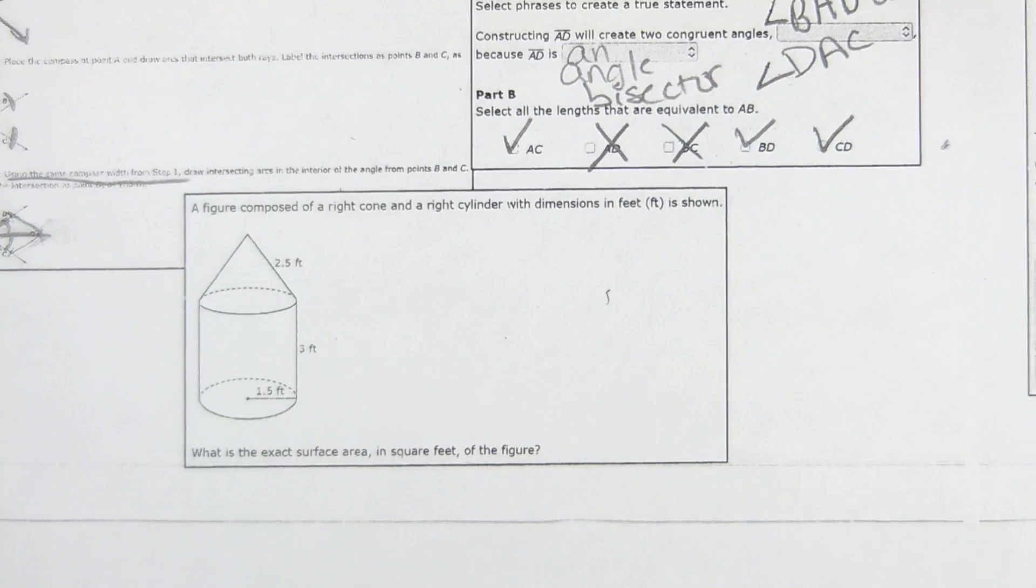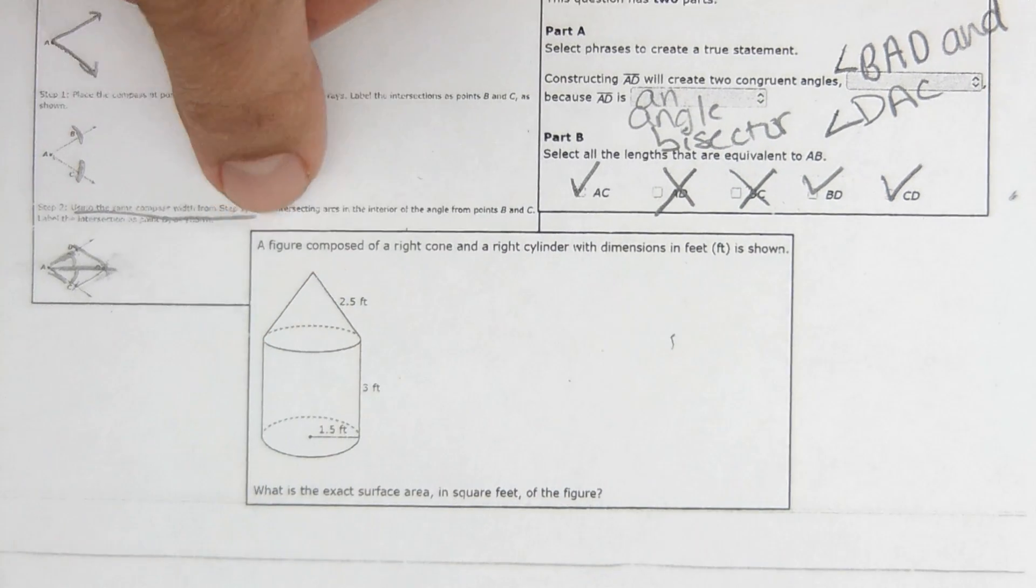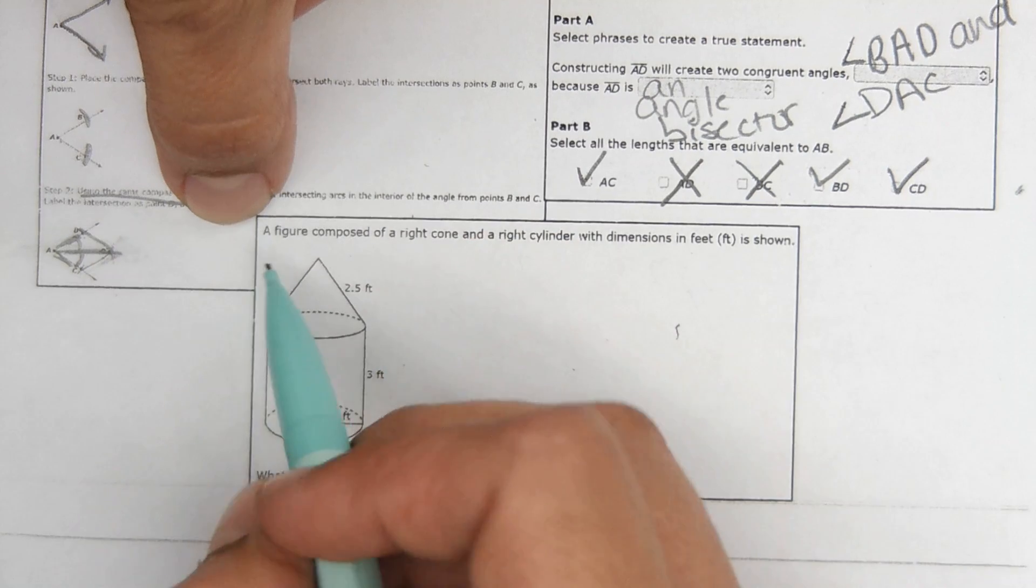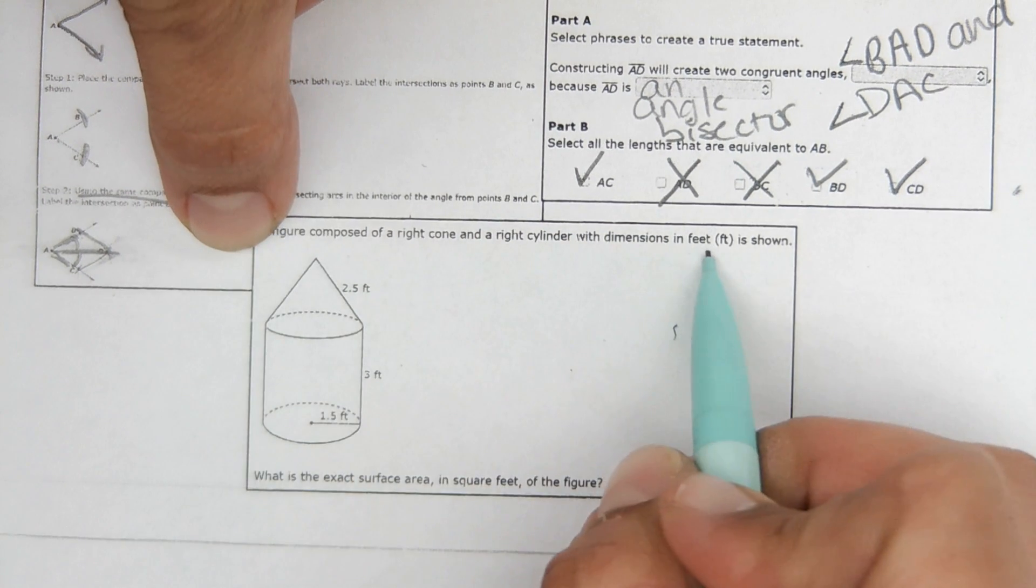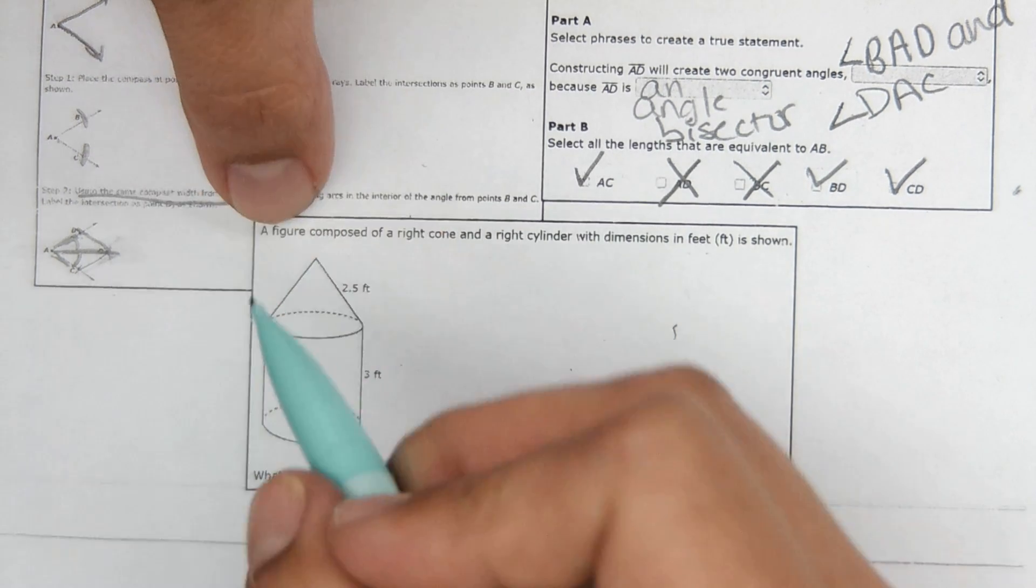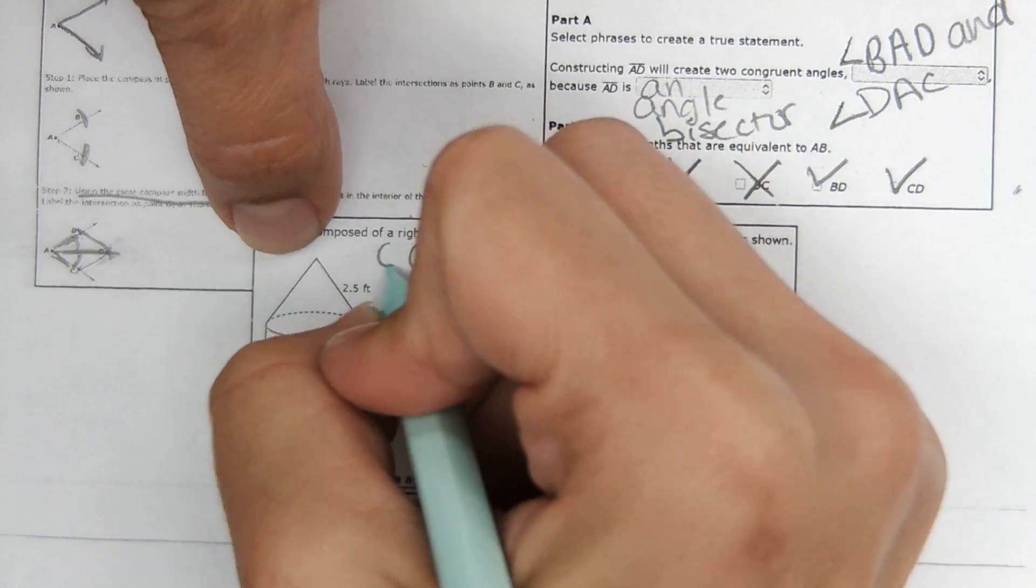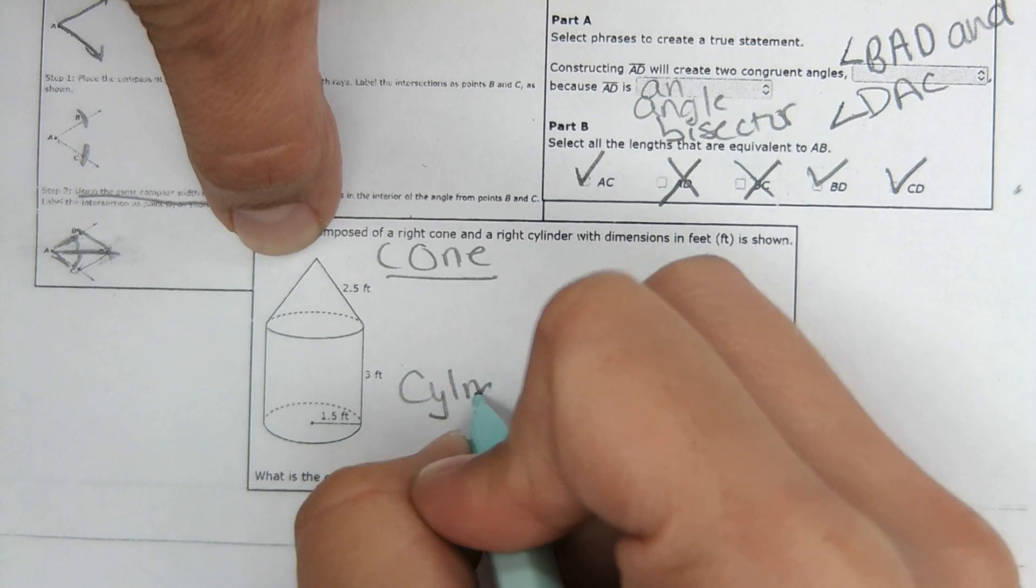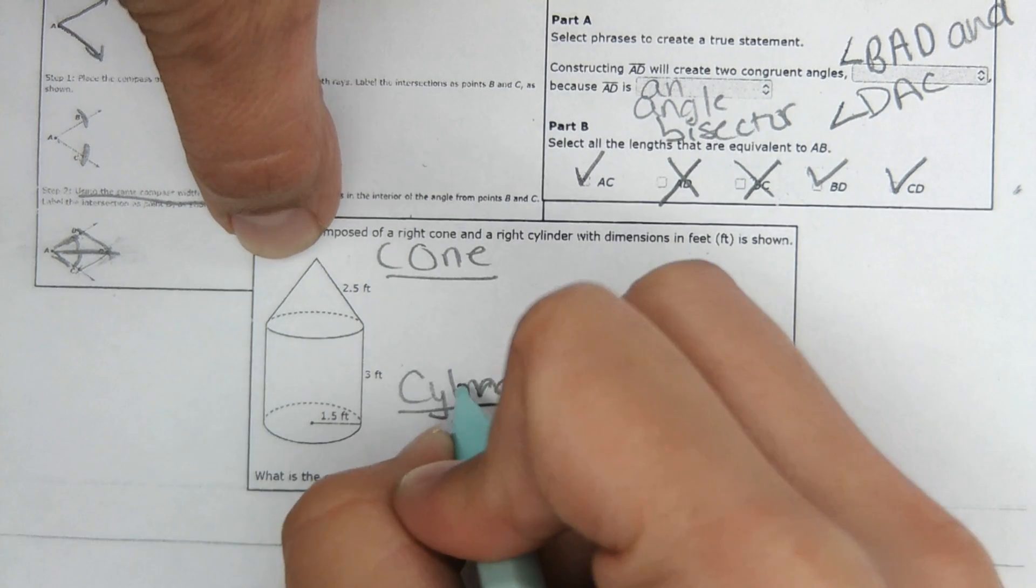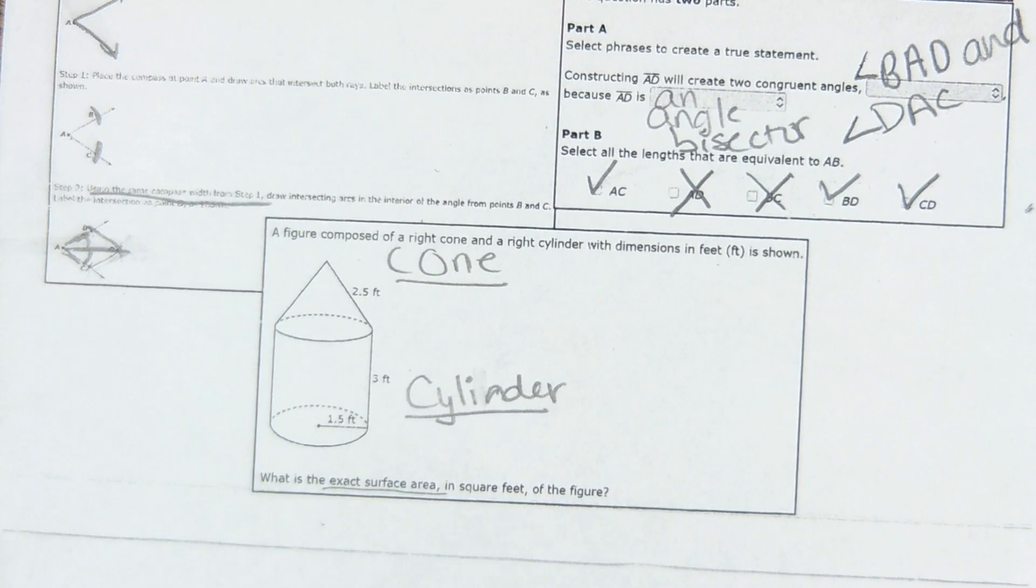Okay. Then this one takes a little bit more calculations. This goes along with what you've been working on on Geometry Nation with surface area. It says a figure composed of a right cone and right cylinder with dimensions in feet is shown. What is the exact surface area in square feet? Okay. So for surface area, that's the area of all the surfaces. So we have the cone part and we have the cylinder part. So we have the cone and we have the cylinder part. Let's see if we can spell, that'd be great.